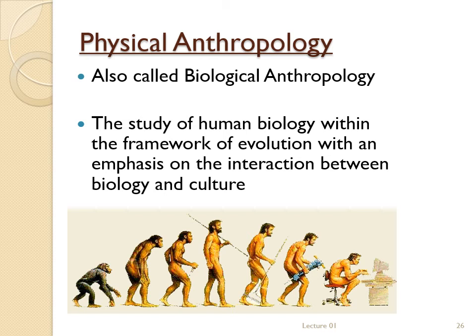The final sub-discipline is the main topic of our course: physical anthropology, also called biological anthropology. It is the study of human biology within the framework of evolution, with an emphasis on the interaction between biology and culture. Like all the sub-disciplines, physical anthropology seeks to understand who we are, exploring that question by looking at the interplay between what we are — the physical — and what we do. In the broad sense, it's about understanding the physical nature of the human creature, but also how we can, to a certain extent, transcend those physical characteristics.